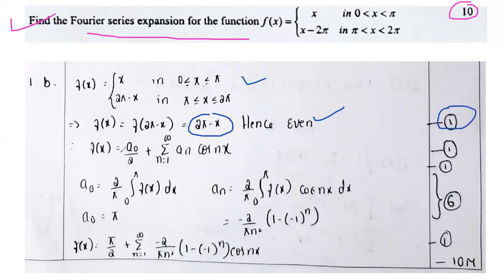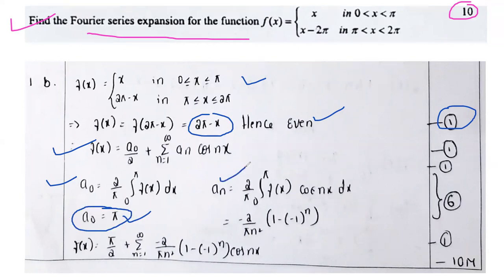Credit will be given for 1 mark for identifying the even function. Now we have to elaborate the formula for Fourier series. f(x) equal to a0 by 2 plus sigma n equal to 1 to infinity a_n cos(nx), because it's even. Now, compute a0: 2 by pi times integral from 0 to pi of f(x) dx, where f(x) is given as 2pi minus x. Ultimately, a0 is equal to pi.